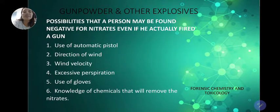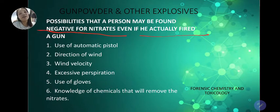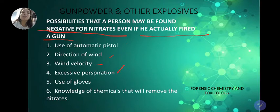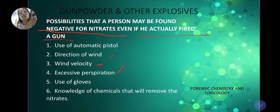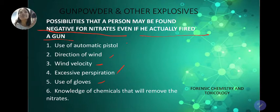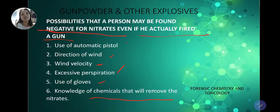These are the possibilities that a person may be found negative for nitrates even if they actually fired a gun: use of an automatic pistol, direction of wind and wind velocity, excessive perspiration — meaning the pores are open so embedded residues may exit — use of gloves which prevent residue from reaching the hand, and knowledge of chemicals that will remove the nitrates.